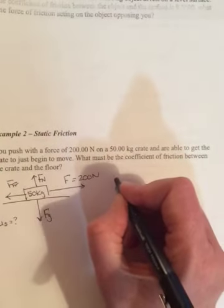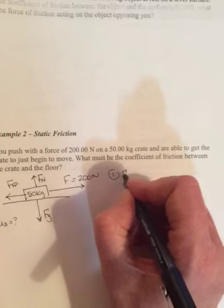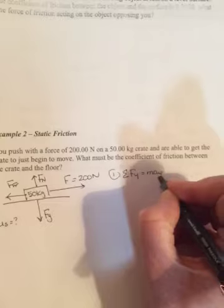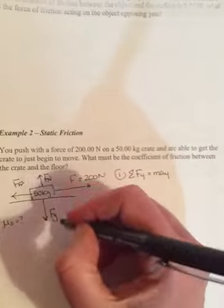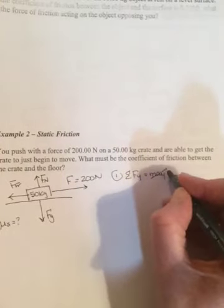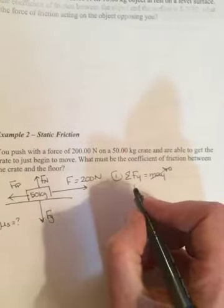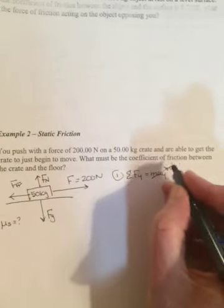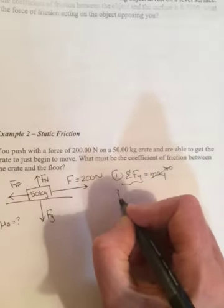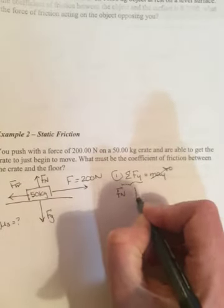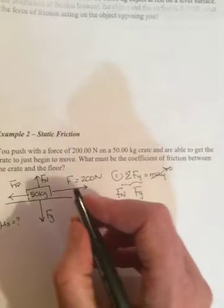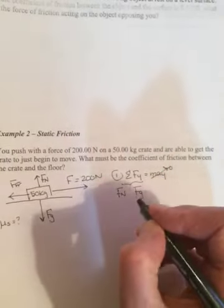So a few minutes ago in example one, I said whenever there's friction, start with the sum of the forces in the y direction. Is this crate moving in the y? No, it's a 50 kilogram crate sitting on a floor. It's not going to float into the air, and it's certainly not breaking through the floor. So this side will be zero. And what are these forces that are acting in the y direction? There's Fn, and there's Fg.